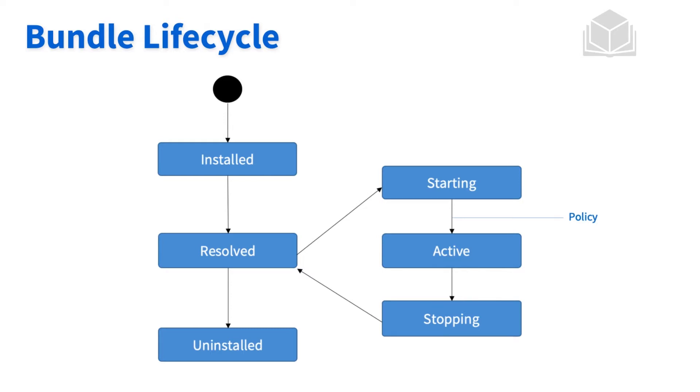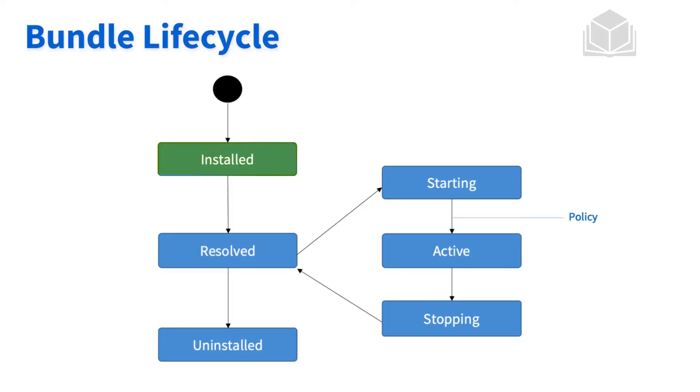Starting at the beginning, let's assume we have a bundle and we are deploying it into the OSGI container. Once inside, it's going to hit the installed state. The installed state lets us know that this bundle has made it into the OSGI container, but that's it. During the installed state, the OSGI container is looking for any dependencies that need to be resolved. Assuming all dependencies are resolved, it transitions to the next state: resolved. The resolved state means the bundle has found all of its dependencies — it's ready to go, but it hasn't been told to start yet.